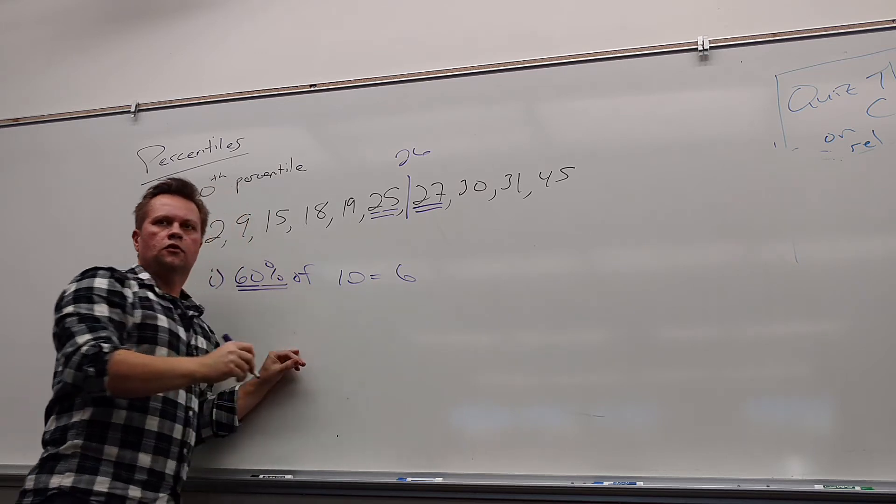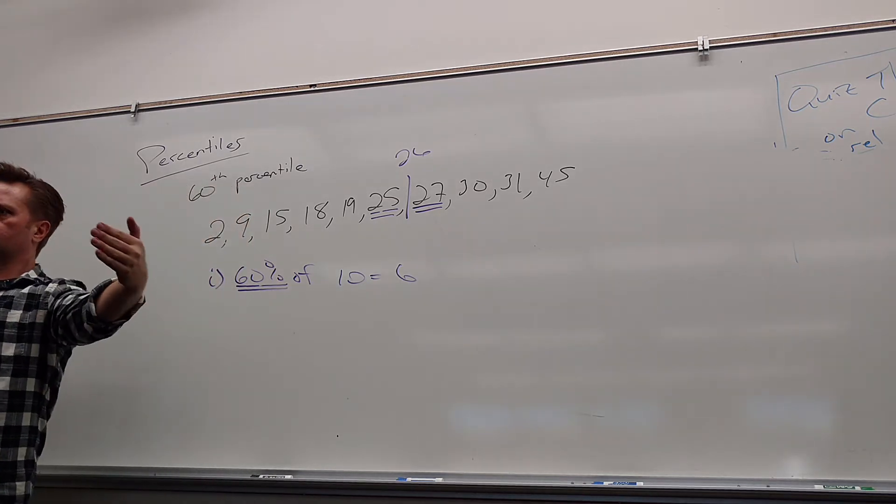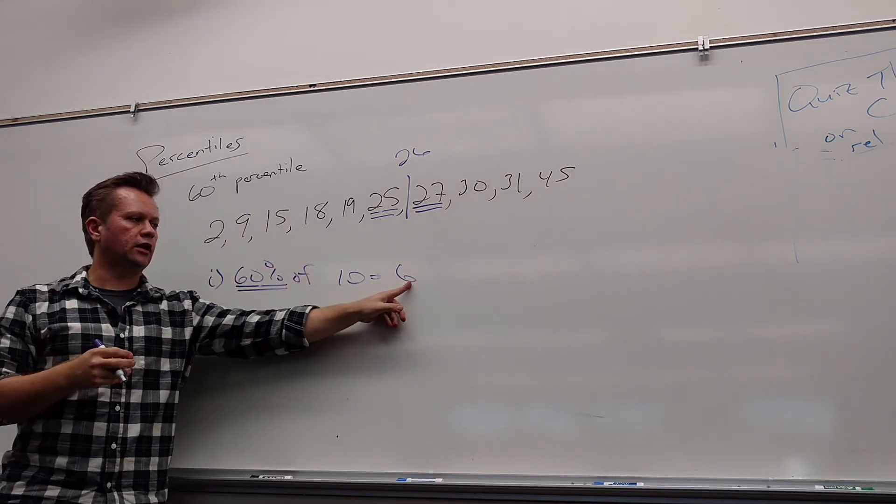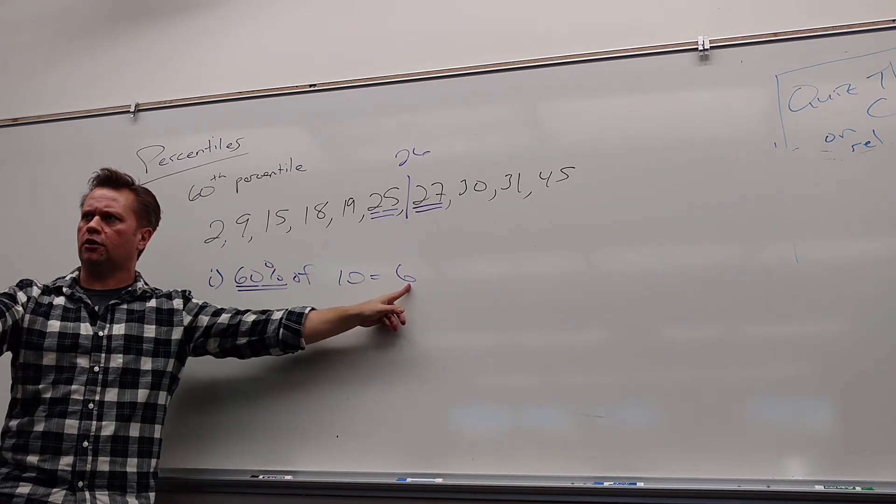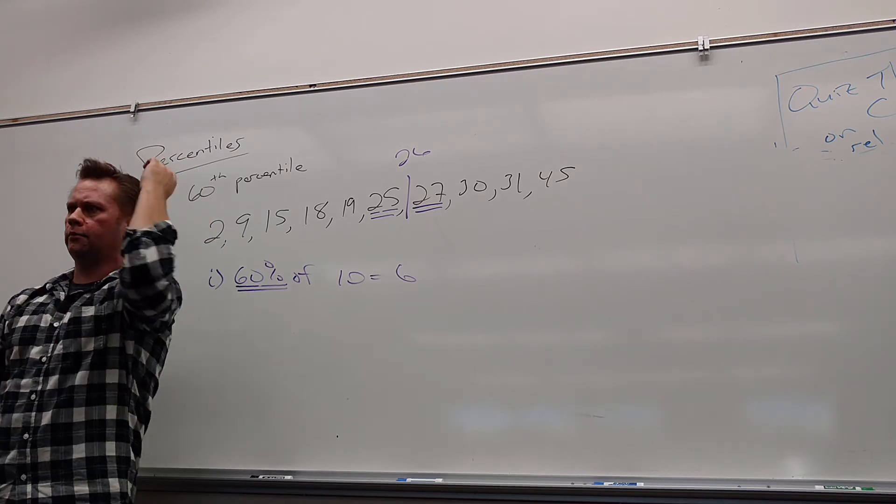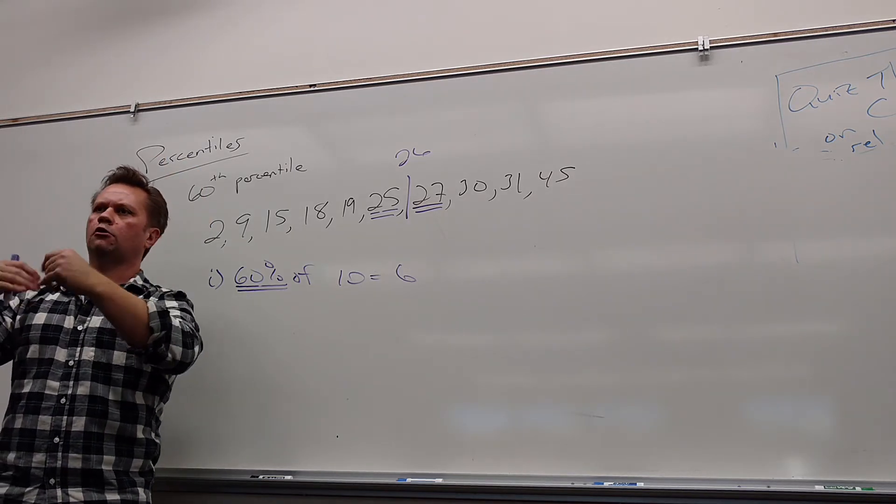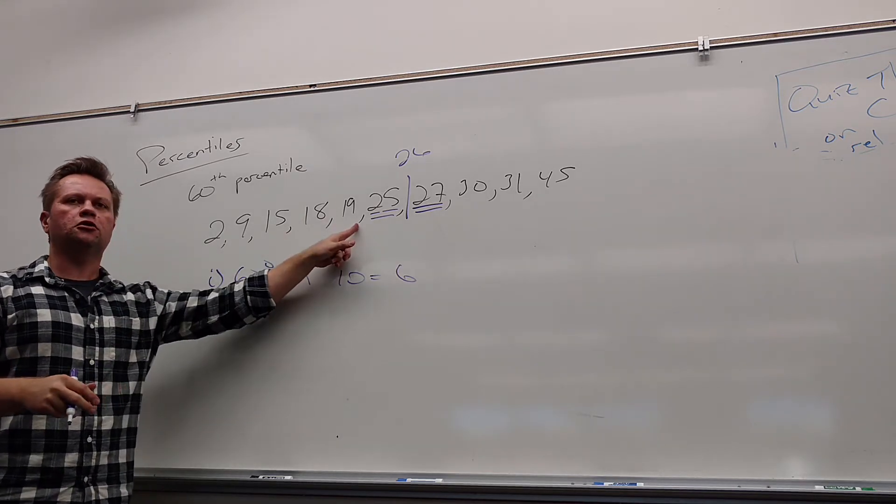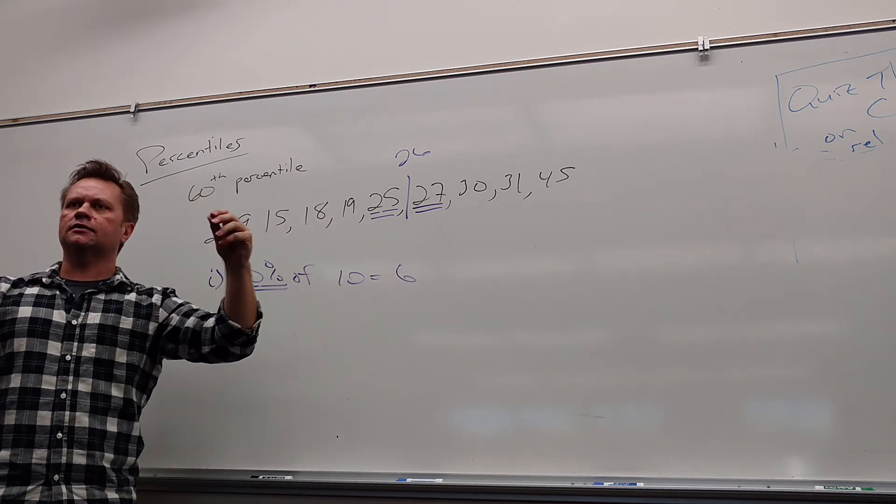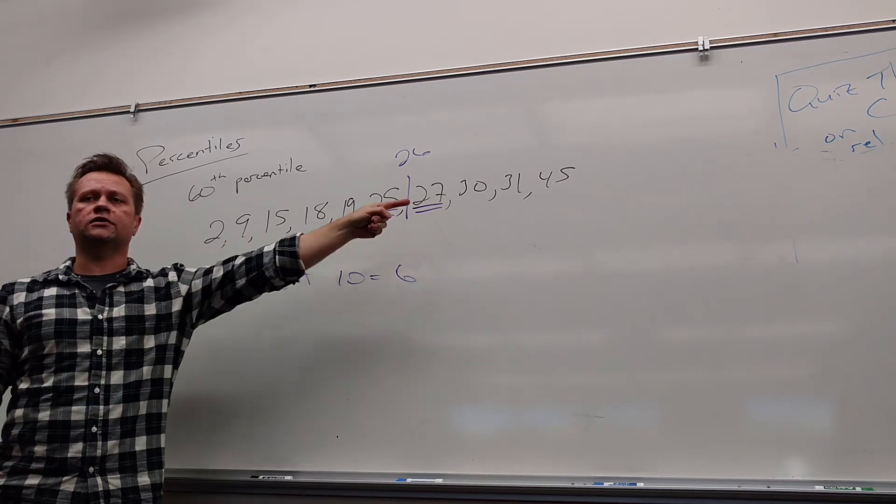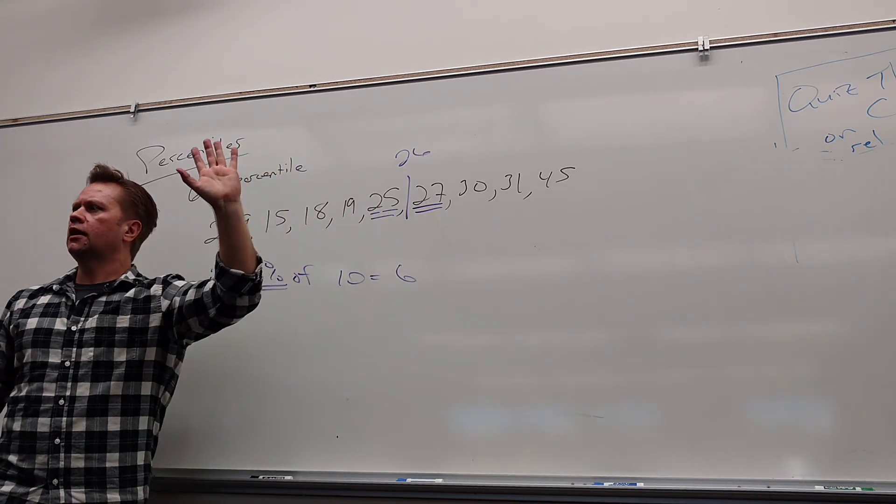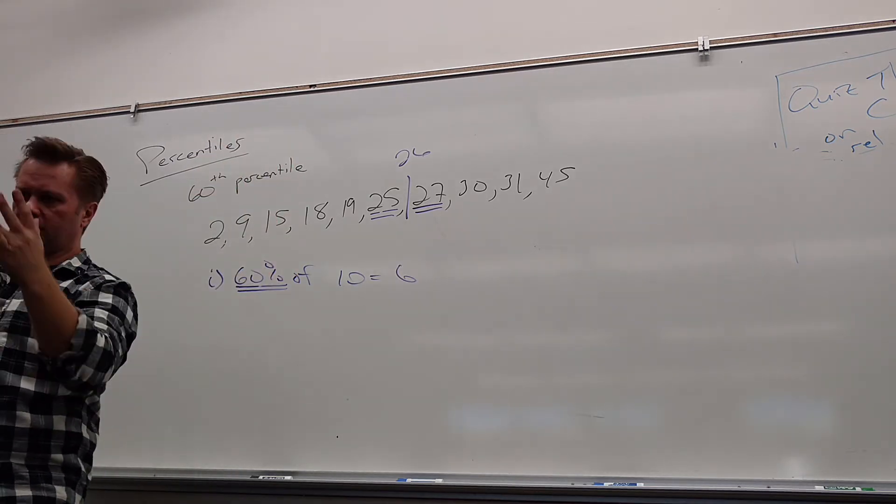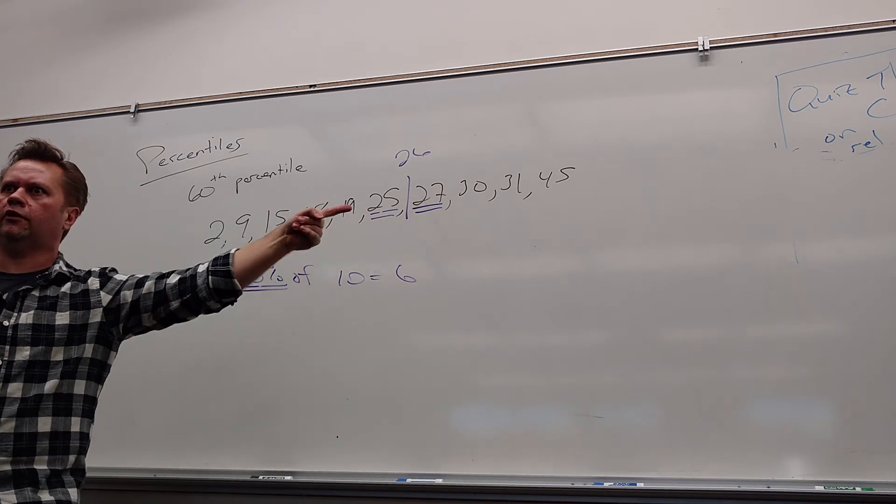so here's how percentiles work. You always take the percentage you want of how long your list is. That's step number one. This is a two-step process always. If it comes out to a whole number, I'm sorry, that's six. You average that one with the next one. Isn't that exactly what we did? If it came out to anything else, to a decimal at all, you would round it up and take that number.